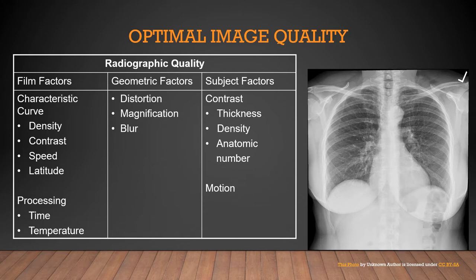We've talked about quite a few of these in past sections. Looking at film factors, I'm looking at density - is the film too dark or too light, too black or too white? With contrast, is it too black and white or is it too gray? Speed is determined by whether I'm using a 100 speed system, which would be an extremity cassette, or a 400 speed system, which would be a high speed cassette. For a chest x-ray I should use a high speed cassette. And what is the latitude - is there too much or too little gray? For a chest x-ray, you want lots and lots of gray.